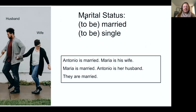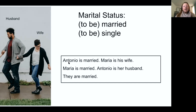Marital status. To be married — we use the verb 'to be.' To be single means not married. Here we have Antonio and Maria again. Antonio is married.